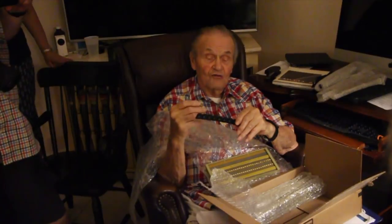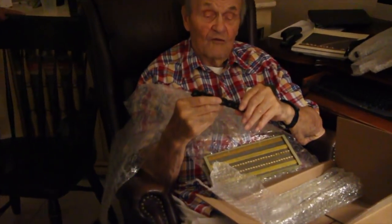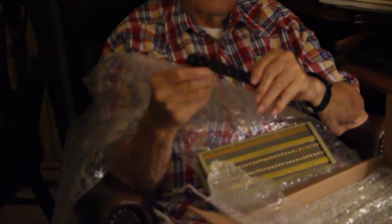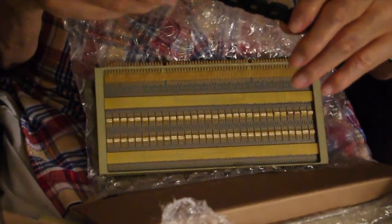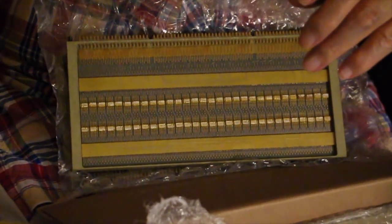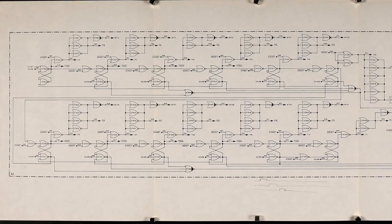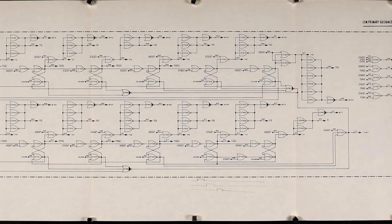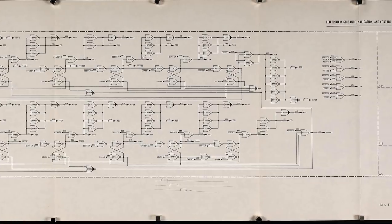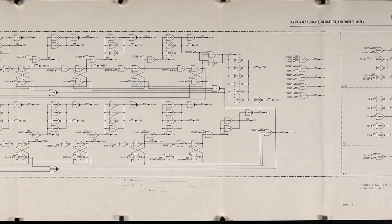Eldon is now 96 years old and lives in Florida. He has kept several important historical artifacts about the AGC. Most famously, he gave Mike the schematics we were missing to restore it.